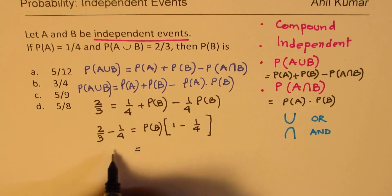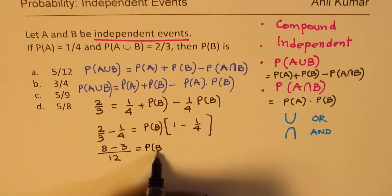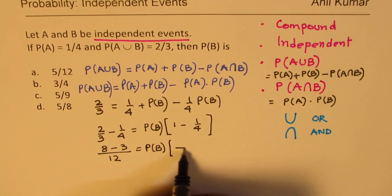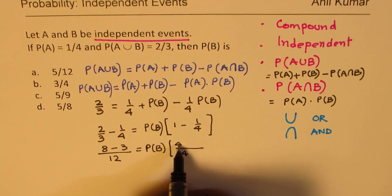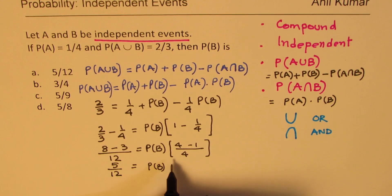That gives you, this is common denominator of 12. 4 times 2 is 8, 3 times 1 is 3. Probability of B, 4 common denominator, 4 minus 1. Probability of B is 8 minus 3 is 5, 5 over 12. And here we get 3 over 4. So, times 3 over 4.